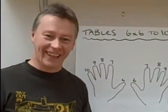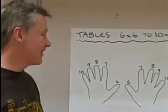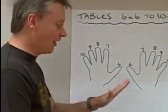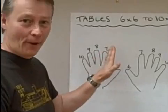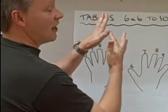6 times 7. Okay, 6 times 7. So we tip the 6 and the 7 finger together. There's my 6 which is my thumb, and the 7 finger which is my first finger there. So 6 times 7.